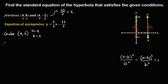To find a, we note that a is the distance from the center to a vertex. Counting from the center to the vertex gives us 5 units. Therefore, a is equal to 5.